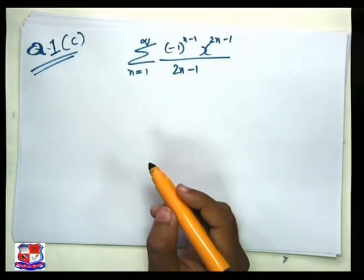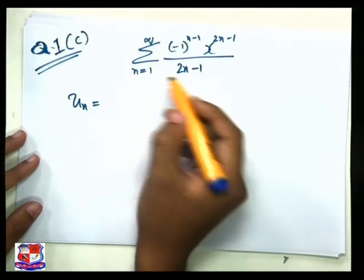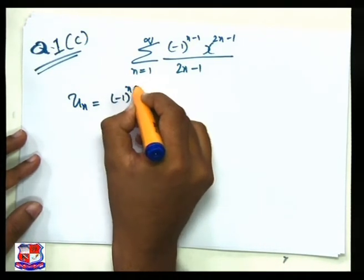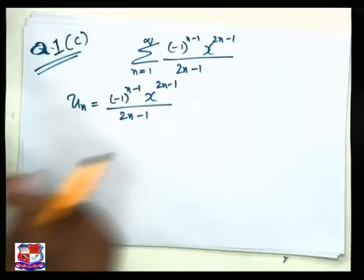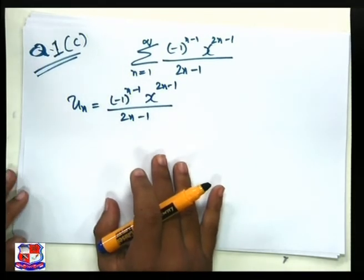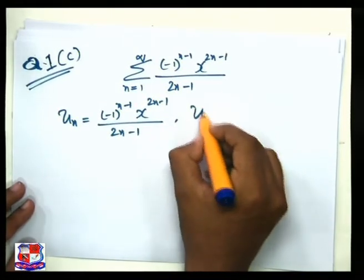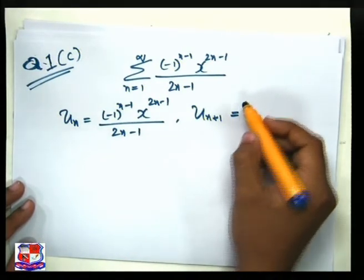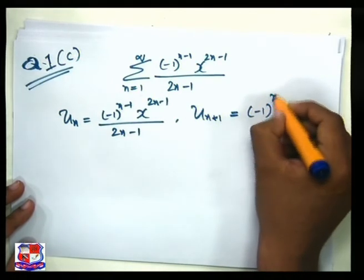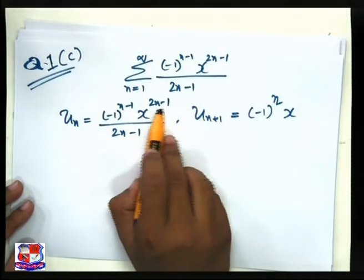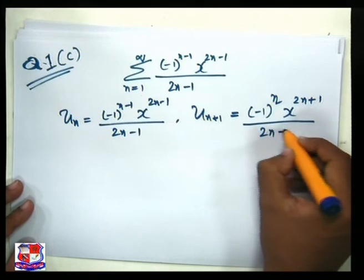Here un = (−1)^(n−1) · x^(2n−1) / (2n−1). For un+1, we replace n with n+1 in all terms, giving: un+1 = (−1)^n · x^(2n+1) / (2n+1).